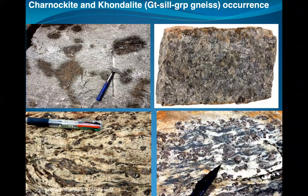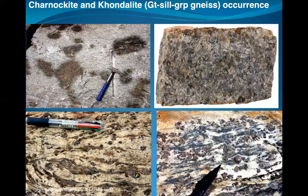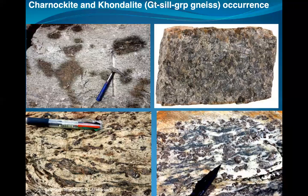We also have pelitic gneisses. Pelitic means meta-sedimentary — the same type as khondalite, which is a special rock variety containing sillimanite. Other rocks without sillimanite we call pelitic gneisses. Gneiss means you have some layering features — a characteristic linear arrangement of minerals.